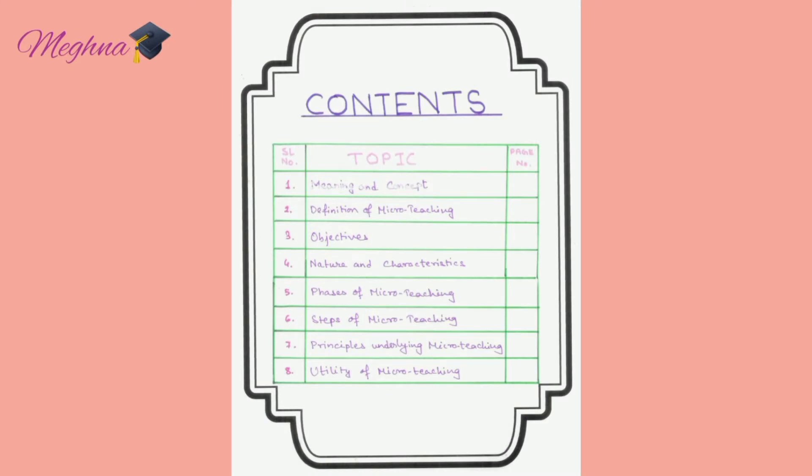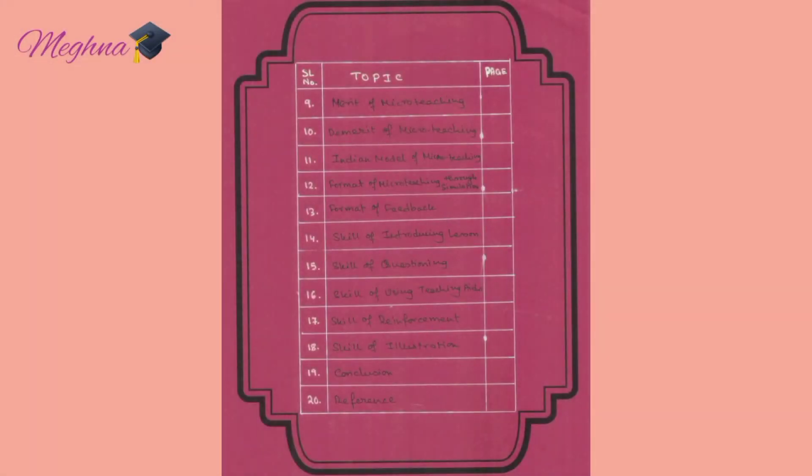The topics covered in this video include: the meaning and concept of micro teaching, its definition, objectives, nature and characteristics, phases, steps, principles underlying micro teaching, utility, merits, demerits, the Indian model of micro teaching, the format of micro teaching, feedback format, and teaching skills such as introducing the lesson, questioning, using teaching aids, reinforcement, and illustration with examples.